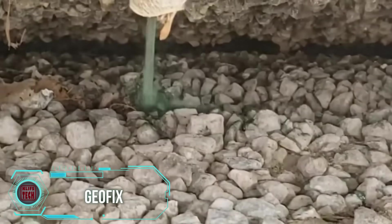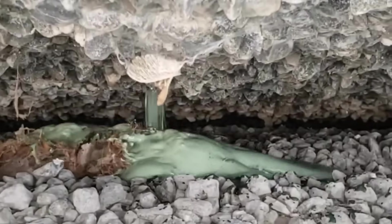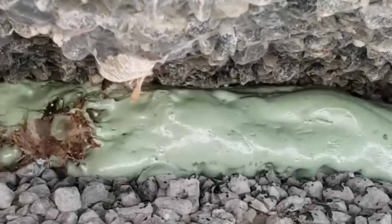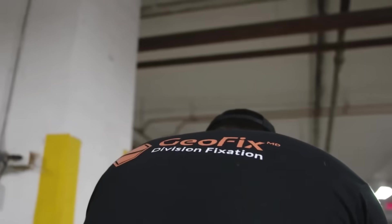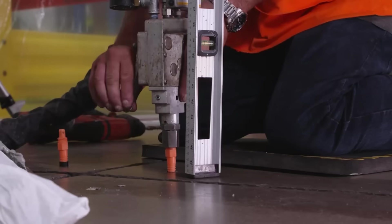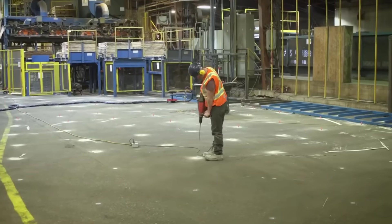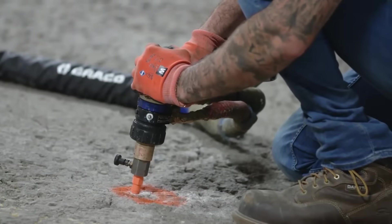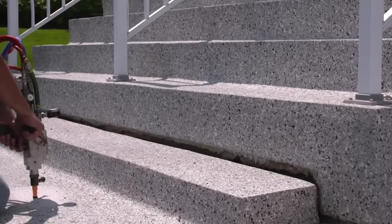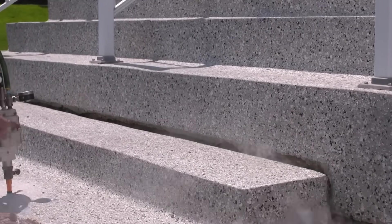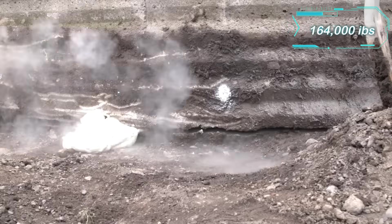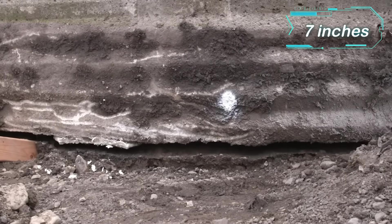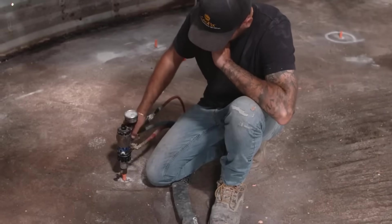Beneath the very ground we walk on, unseen troubles can brew. Voids forming under tiles or concrete floors harbor the potential for cracks and tilts that not only demand costly repairs but also pose a threat to lifts. Thankfully, builders wield a powerful solution in the form of a special polymer foam, GeoFix. This remarkable substance not only fills those troublesome voids but also facilitates foundation leveling, offering a reliable ace up their sleeves. GeoFix, showcased on screens, has already demonstrated its prowess by saving an 82-ton grain silo, lifting it over 17 centimeters.